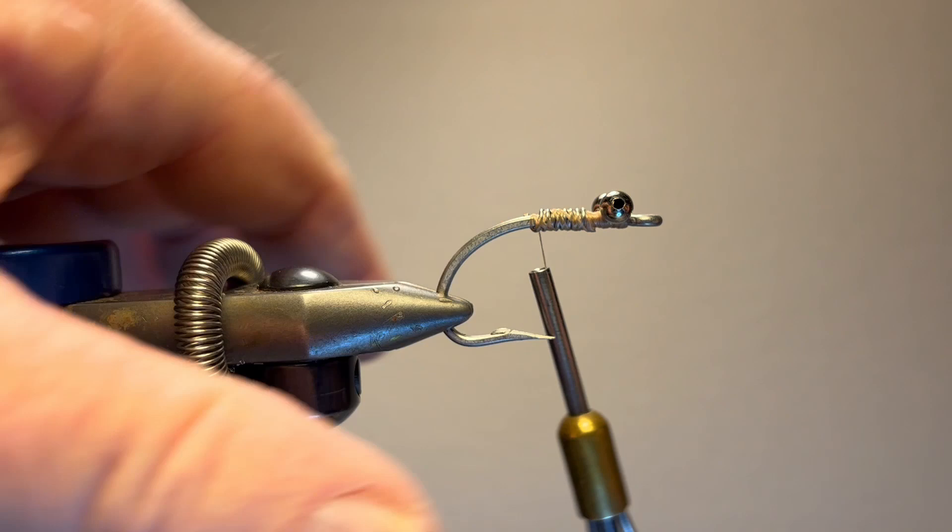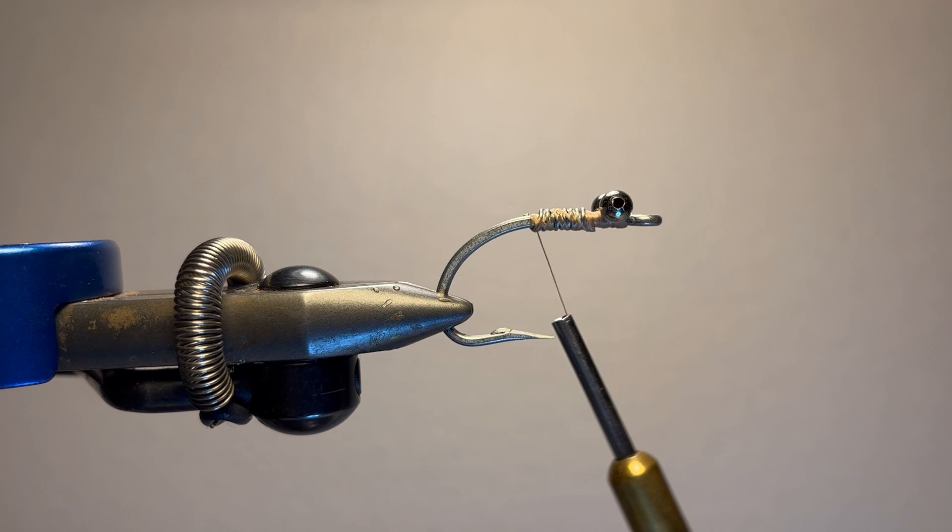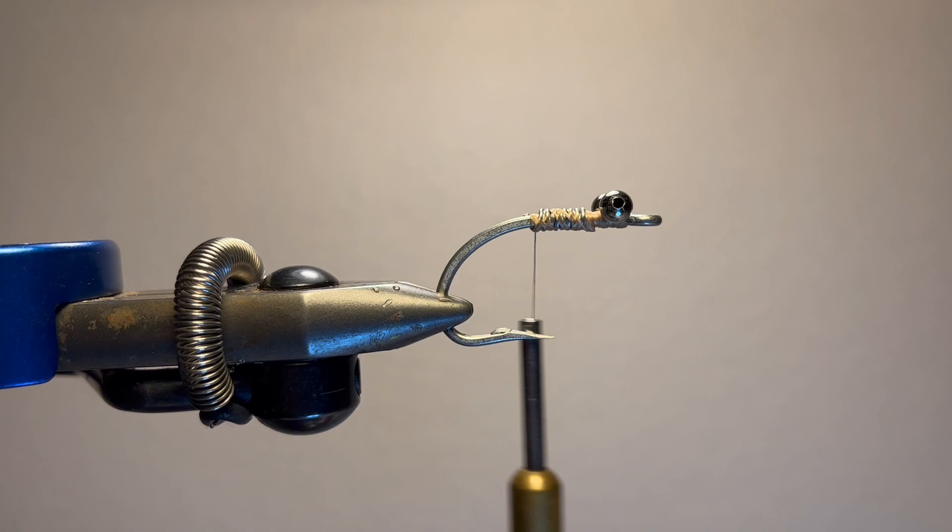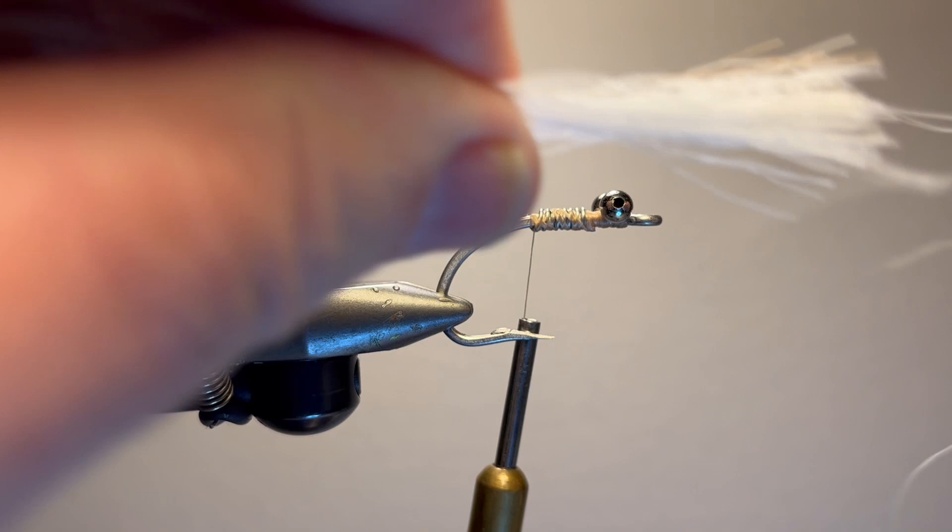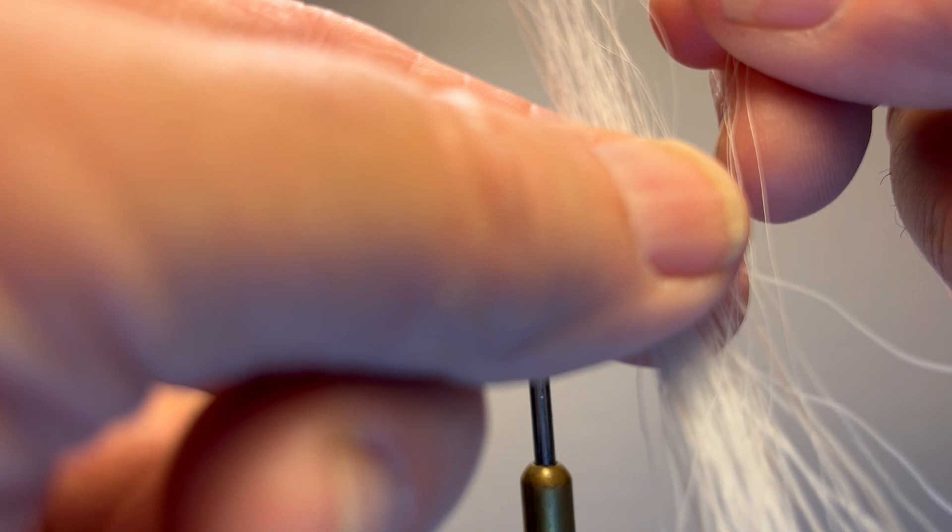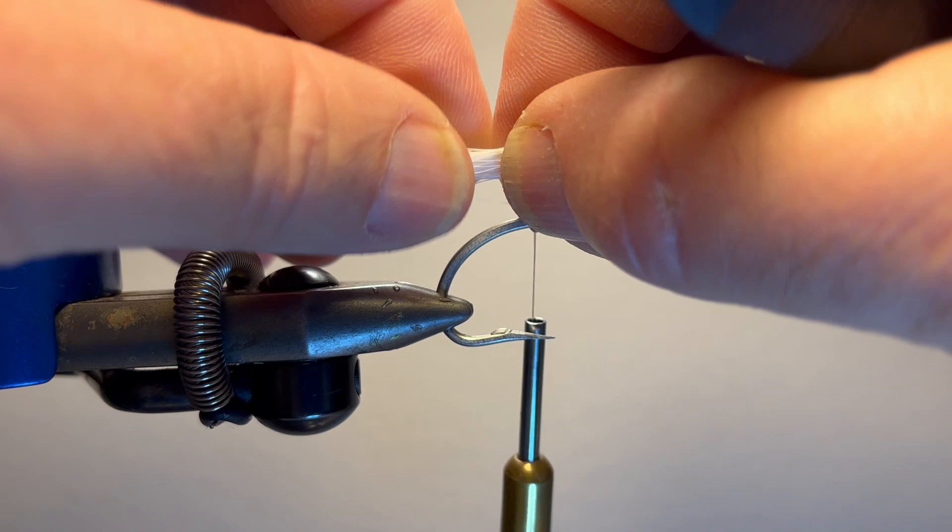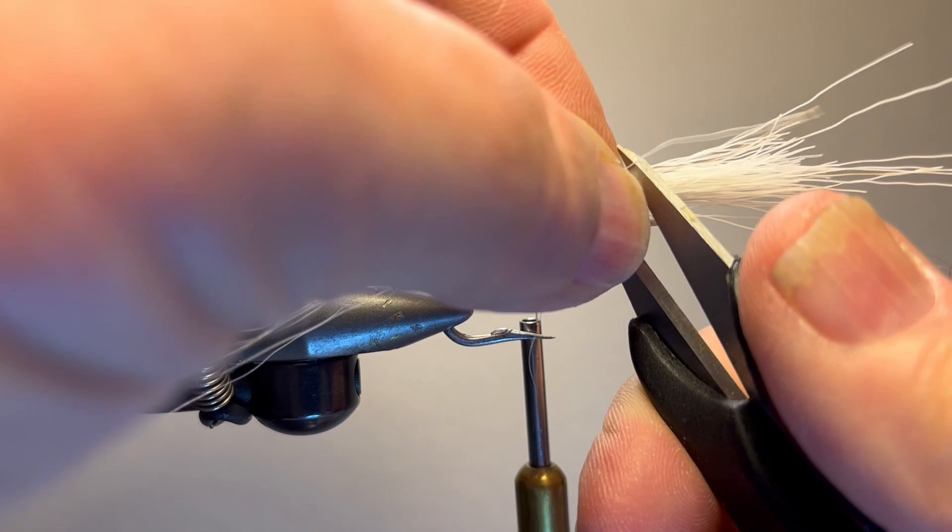All right. I'm going to take a little white bucktail. I'm just going to pull all the short ones out, and then I'm going to stack these by hand stacking them like that. I'm going to measure it, and I roughly want it about an inch and a half. So I'm going to cut it and tie it in with a couple wraps and kind of force it around.